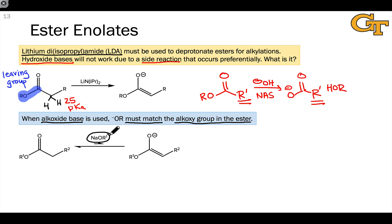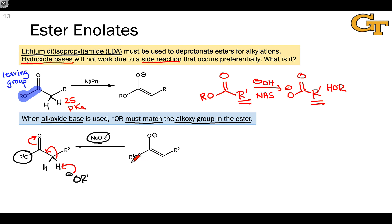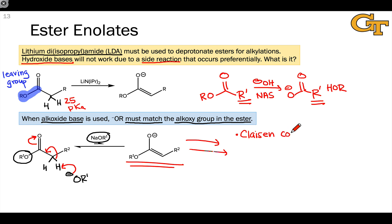Even though alkoxides are not generally basic enough to affect this deprotonation completely, this is similar to the use of hydroxide or alkoxides to generate a ketone or aldehyde enolate that we saw previously. We can often get by with generating small amounts of the enolate at a time, as long as the enolate is continuously consumed through reaction with an electrophile. This is used in the Claisen condensation — essentially nucleophilic acyl substitution of an ester by an ester enolate — where the enolate is generated using an alkoxide and continuously consumed, so the initial deprotonation doesn't need to be favorable.